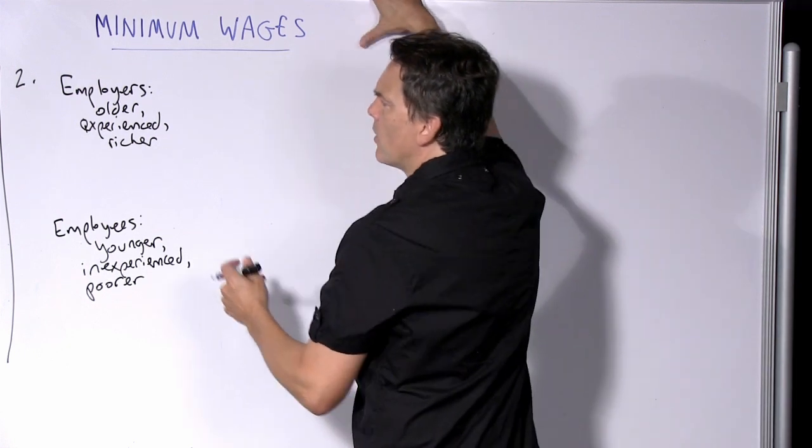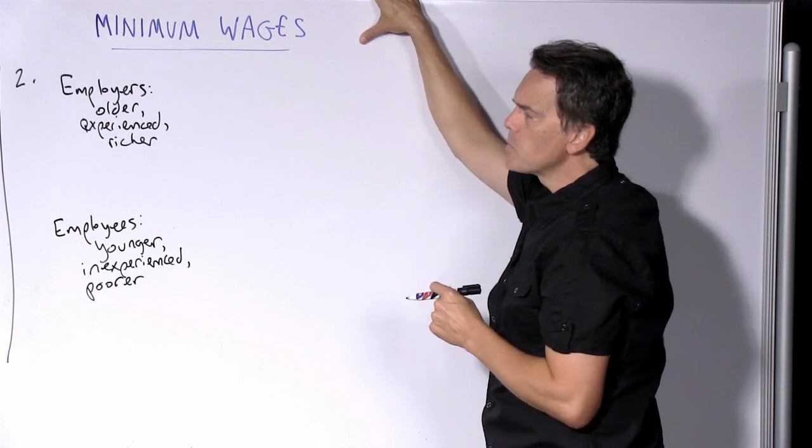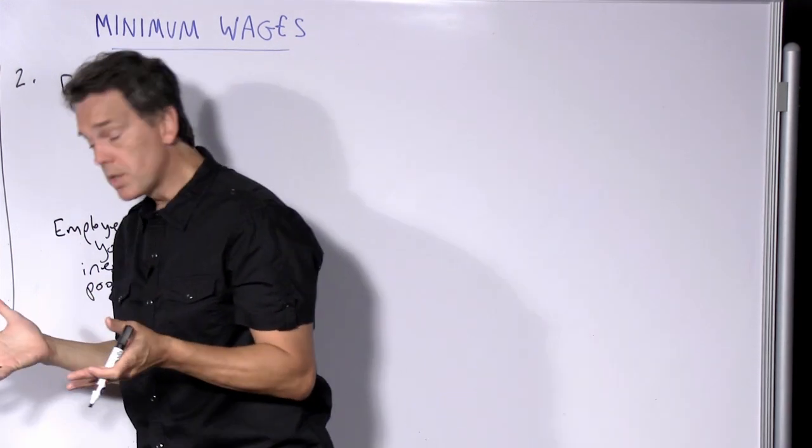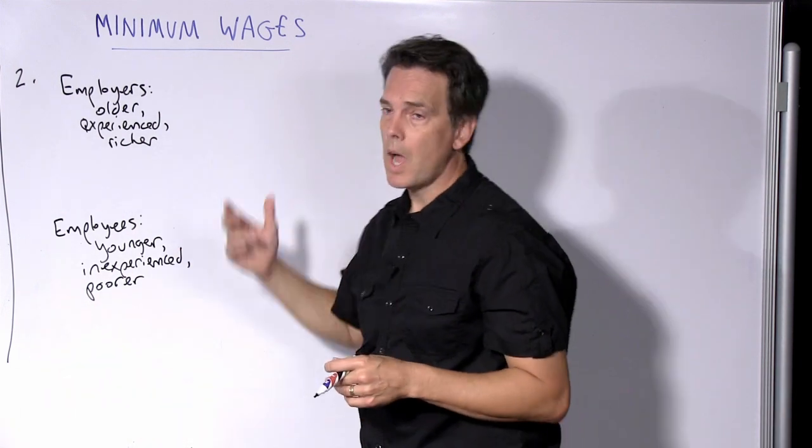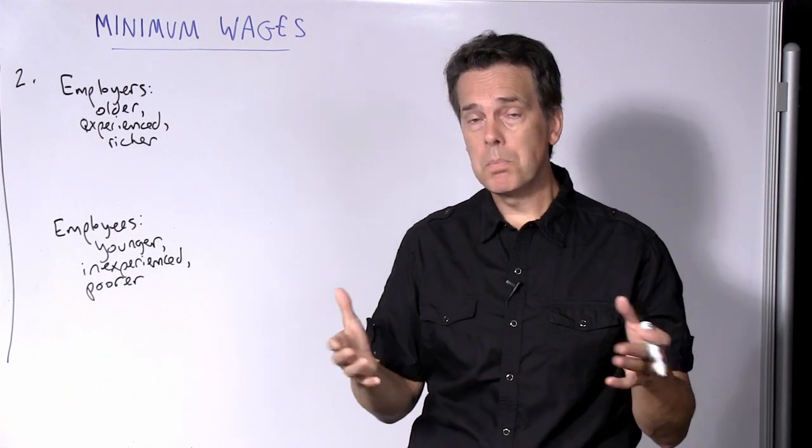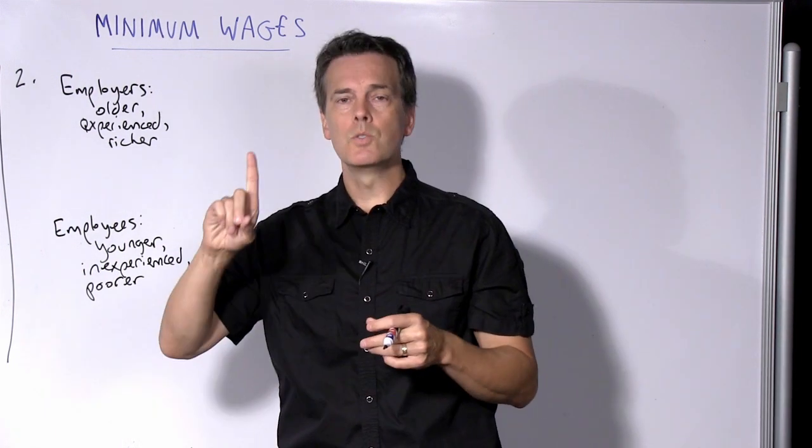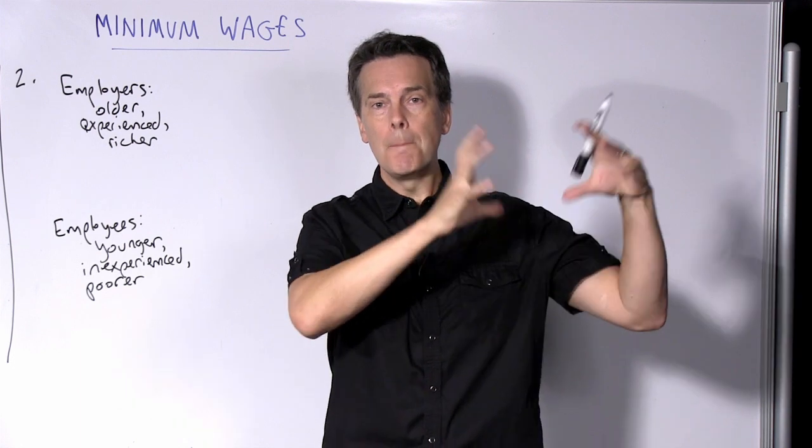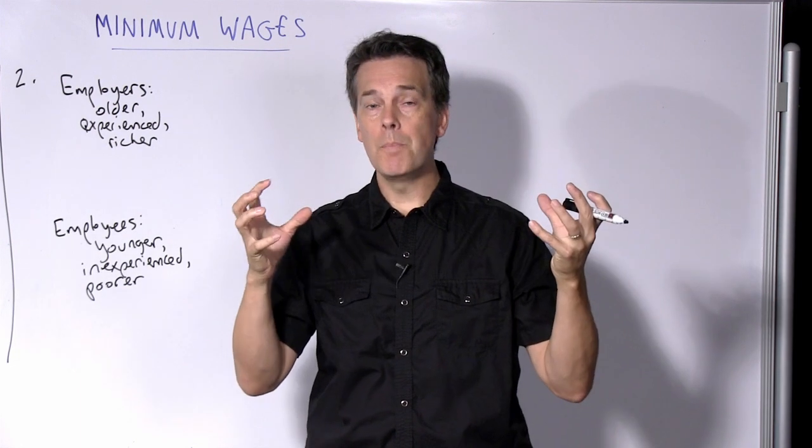There's another facet here that the advocates of minimum wage will typically argue, and that is with respect to bargaining power. If we think of one standard kind of case, a job opens up. An employer wants to hire someone. Many people will apply for that one job. So what we have then on the supply side is one position, but then on the demand side, we have many people who would like to have that position. So supply and demand are out of balance.